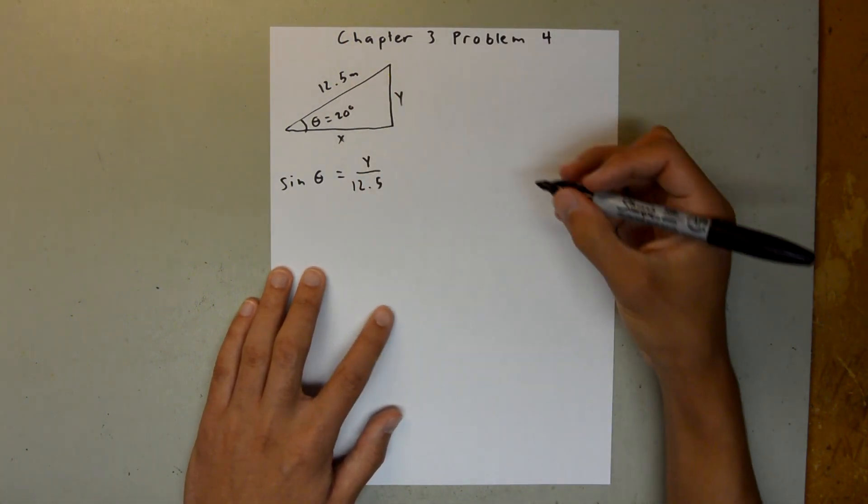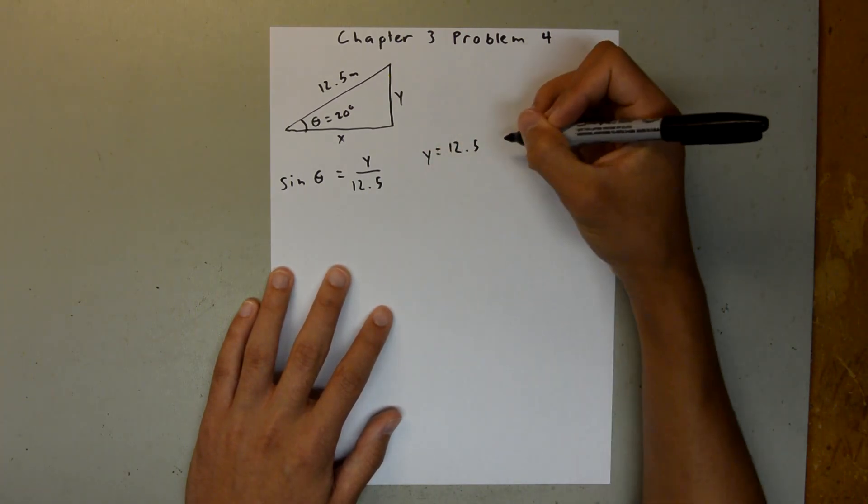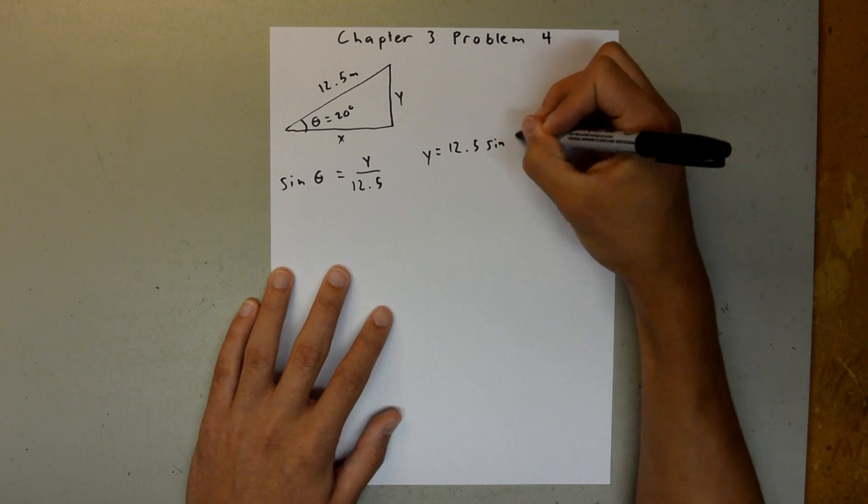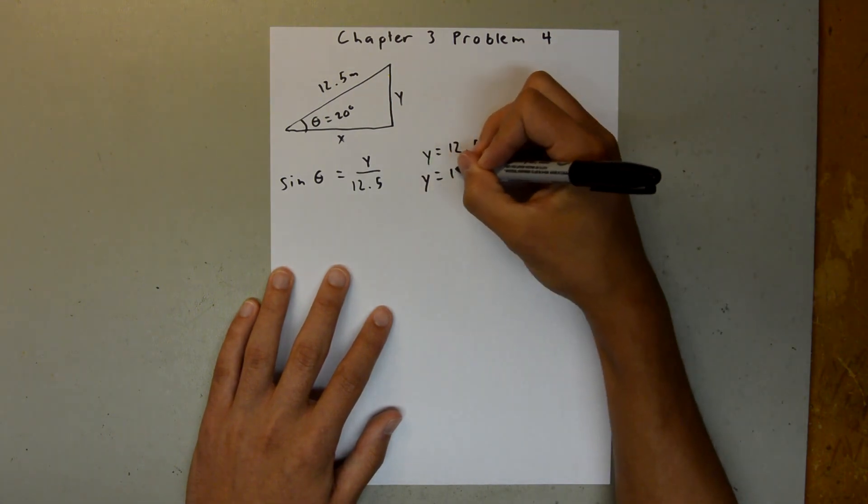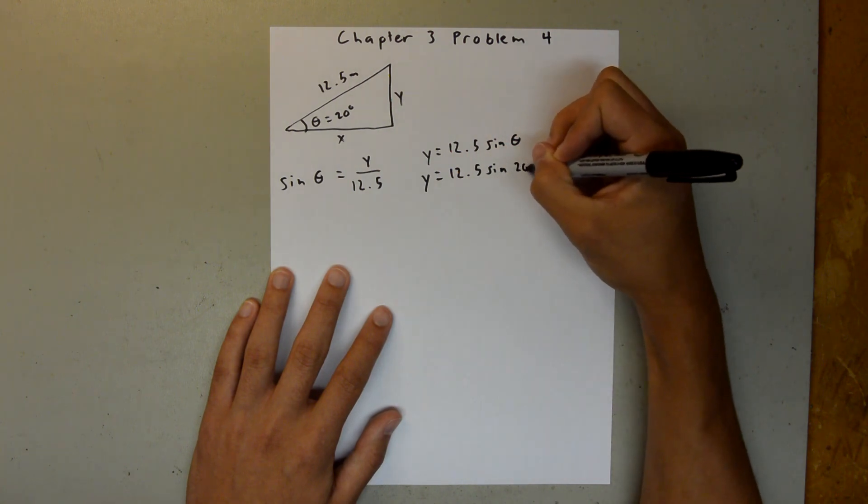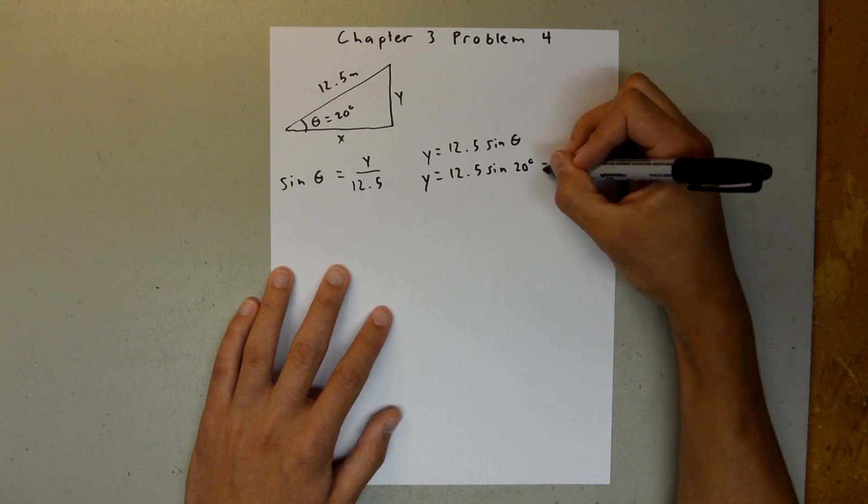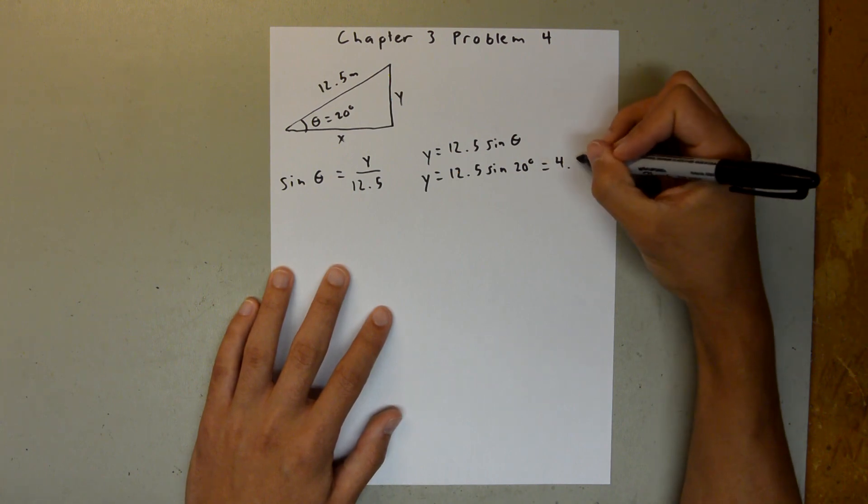So we can solve for y, and say y is equal to 12.5 sine of theta. So y is equal to 12.5 sine of 20 degrees. And when you plug that into your calculator, you should get 4.28 meters.